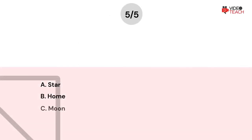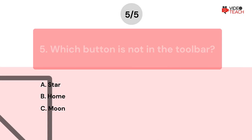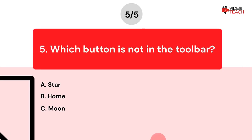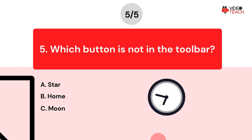Which button is not in the toolbar? Option A: Star. Option B: Home. Option C: Moon. Now you have about 15 seconds to think about your answer.